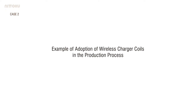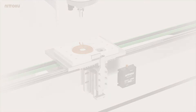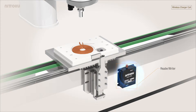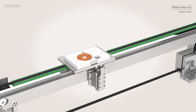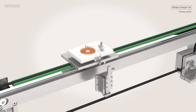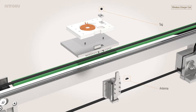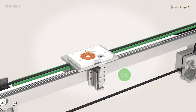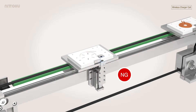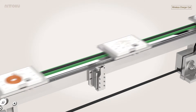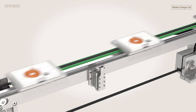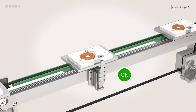The second example is used in the production process of wireless charger coils. RFID tags are attached to the pallets to control the process. No material loss or machining loss will occur because a workpiece written as defective in a previous process will not be machined — it will be judged at the time of reading in the next process.